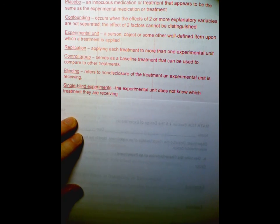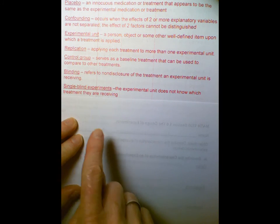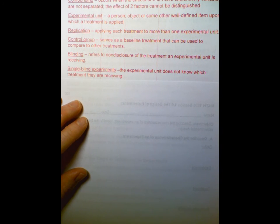So a single blind experiment means the experimental unit does not know which treatment they're receiving. That's what I was just referring to, single blind. So blinding is just non-disclosure. So we can have single blind, where just the person, the experimental unit does not know.